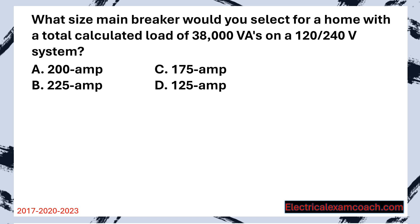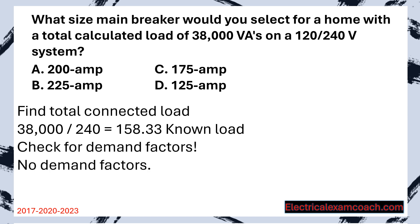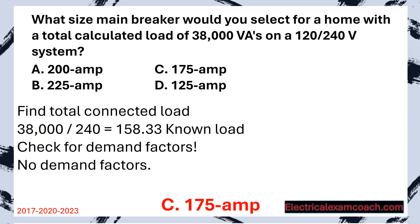What size main breaker would you select for a home with a total calculated load of 38,000 VAs on a 120/240 volt system? Step one: find our total connected load. They've already done the math for us, so all we have to do is divide by the system voltage — in this case it equals 158 amps. Now we check for demand factors; there are no more demand factors on this calculation. We head to Table 240.6A and choose the next standard size breaker — 175 amps.